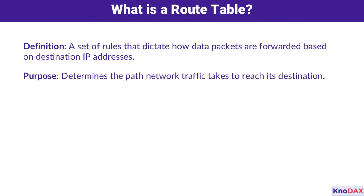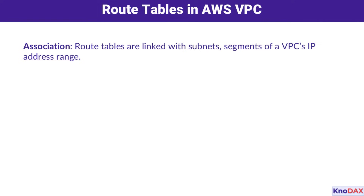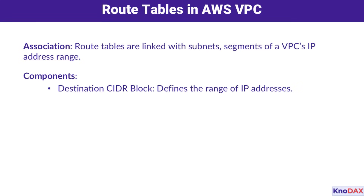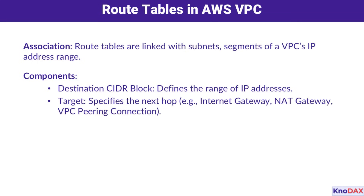In AWS, route tables play a crucial role. They're tied to subnets, which are segments of your VPC. Each route table has two main parts: the destination CIDR block, which defines the range of addresses, and the target, which specifies the next stop for the traffic. This structure ensures precise and secure routing.